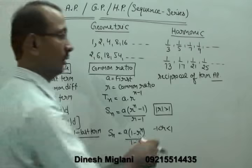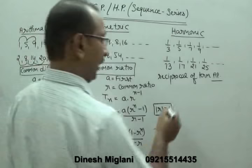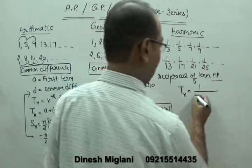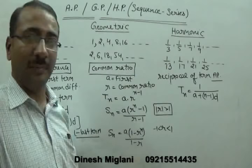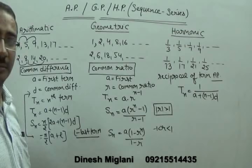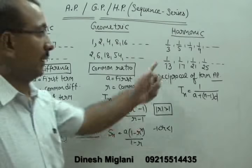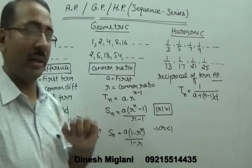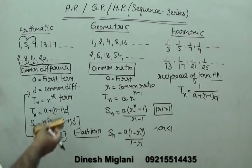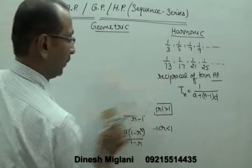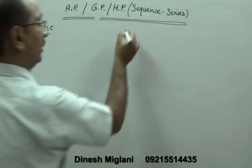For harmonic progression, although there is no standard formula for finding the sum, the nth term is: tn = 1/[a + (n−1)d]. This is because HP is the reciprocal of AP — when we take the reciprocal of each term it becomes arithmetic progression. There is no sum formula for HP because we cannot add 1/3 + 1/5 and then simply reverse it.